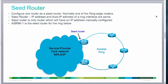Another important concept is the seed router. The seed router is the one which triggers the auto IP address assignment in the ring network. The seed router is the one which has the working interface IP address equal to the auto IP address.